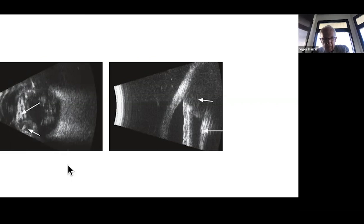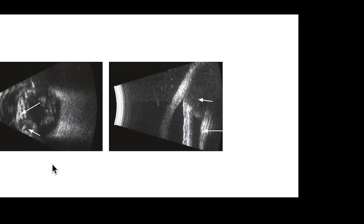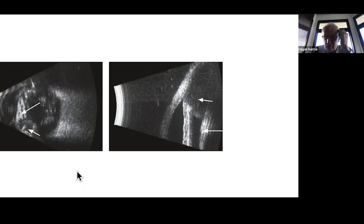Silicone oil significantly affects ultrasound measurements. An eye filled with silicone oil appears artificially elongated on B-scan — the retina appears far away and the image looks unusual. This is because silicone oil slows sound velocity to approximately 1,000 m/s compared to the normal vitreous velocity of 1,532 m/s. The machine interprets the longer travel time as a longer eye, producing artifactually large axial length measurements — typically 30-35 mm.